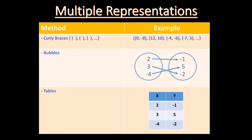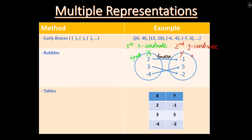We have multiple ways to represent a relation. Sometimes we put ordered pairs inside curly braces with a comma between each ordered pair. In an ordered pair, the first number represents the x-coordinate and the second number represents the y-coordinate. Sometimes we use two bubbles: the left bubble represents x-values or input, and the right bubble represents y-values or output. Sometimes we demonstrate a relation in a table, where the left column represents x-values and the right column represents y-values.